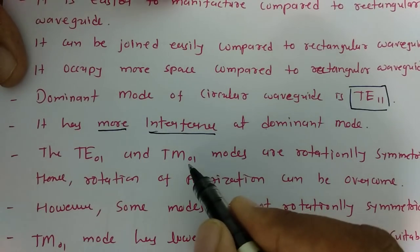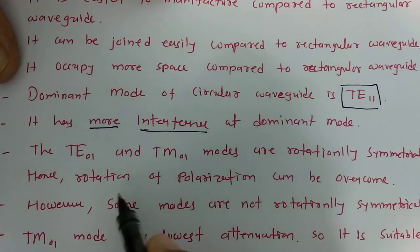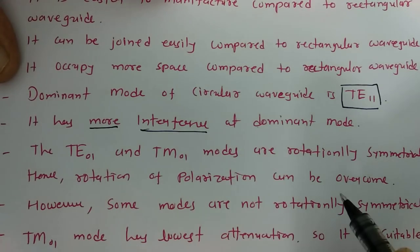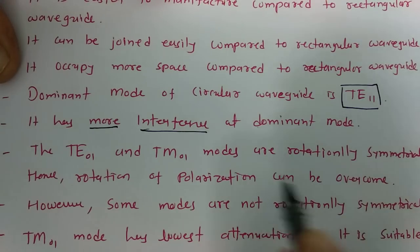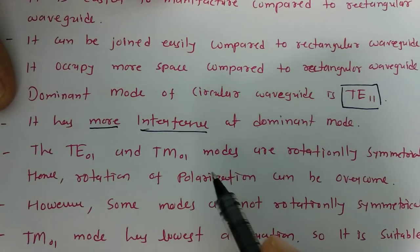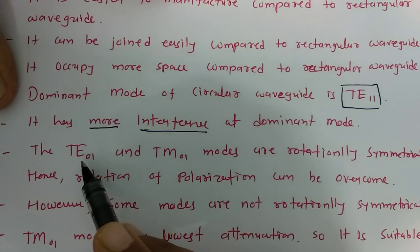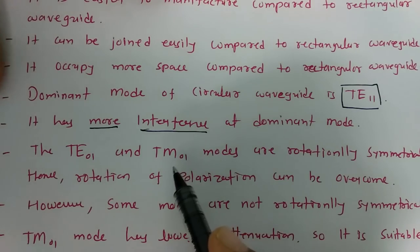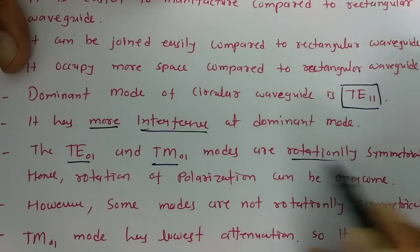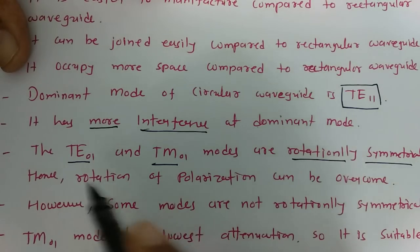TE01 and TM01 modes are rotationally symmetrical. Due to these two modes being rotationally symmetrical, the rotation of polarization can be overcome. Circular waveguide does have a problem regarding rotation of polarization, but with TE01 and TM01 modes, that problem does not occur.